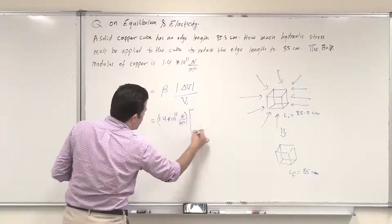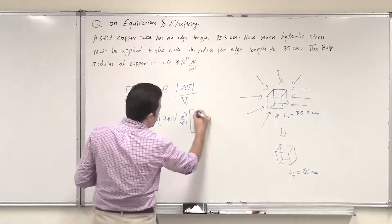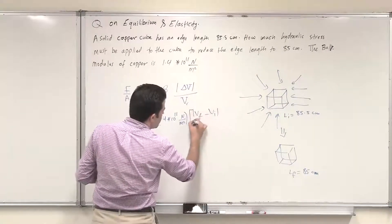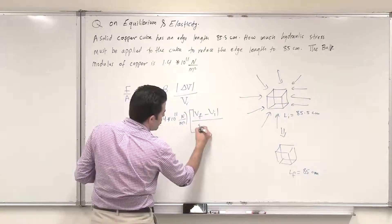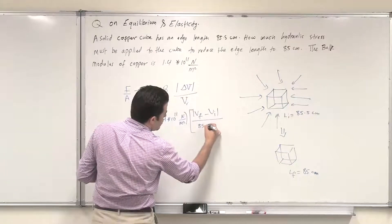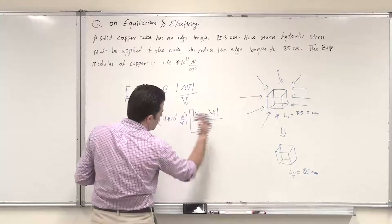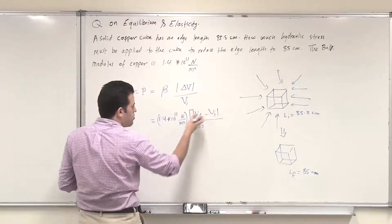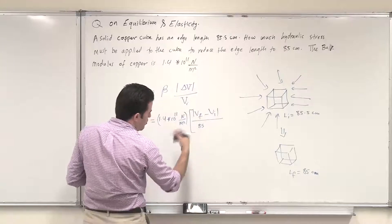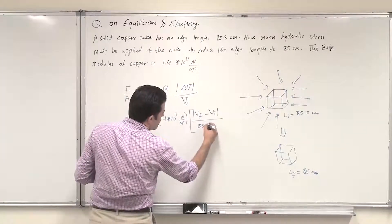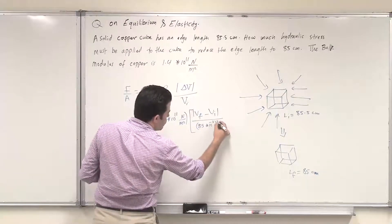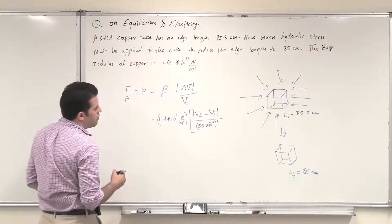We need to find the change in volume, which is the absolute value of V final minus V initial, divided by V initial. The initial edge is 85.5 centimeters and the final is 85 centimeters. This is a ratio, so we could leave it in centimeters, but I choose to convert to meters for practice. So 85 × 10 to the minus 2 meters, and we cube it to get the volume of the cube.